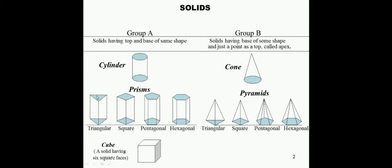For a triangular prism, there will be three vertical rectangular faces. And for a triangular pyramid, there will be three vertical triangular faces. Remember, these vertical triangular faces are isosceles triangles. The base of the triangular pyramid is an equilateral triangle.